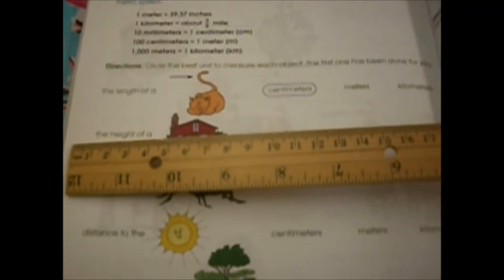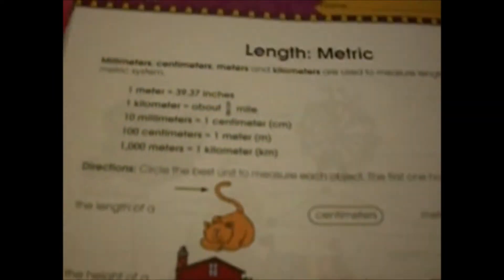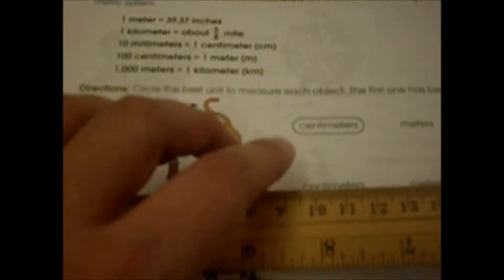If you think about a centimeter, most rulers have a centimeter side. A centimeter is really tiny. A meter - think of your yardstick - that's one meter. A kilometer is what meters change into and it's about five eighths of a mile. We know right away kilometer is not going to work for a grasshopper. Meters could if it's a giant grasshopper, but this is a regular grasshopper so we are going to use centimeters.